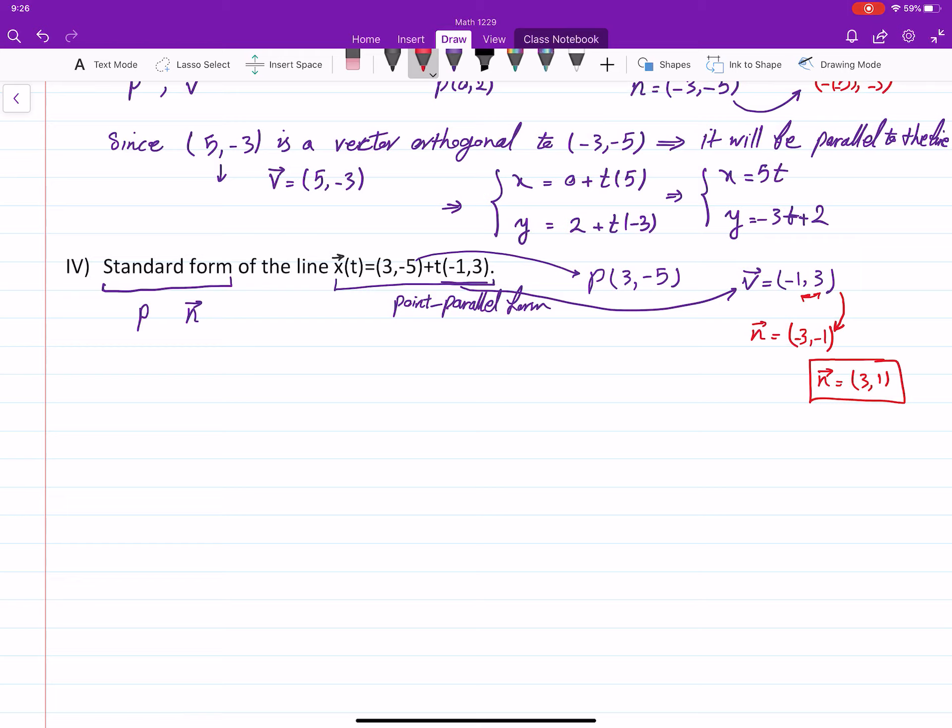Okay, so then I have N, I have P, then the equation, the standard form always starts from this point. We plug in everything here, 3, 1 dot X, Y is going to be equal to 3, 1 dot 3 and negative 5. This is 3X plus Y equals to 9 minus 5. That means that 3X plus Y equals to 4. That's the standard form.